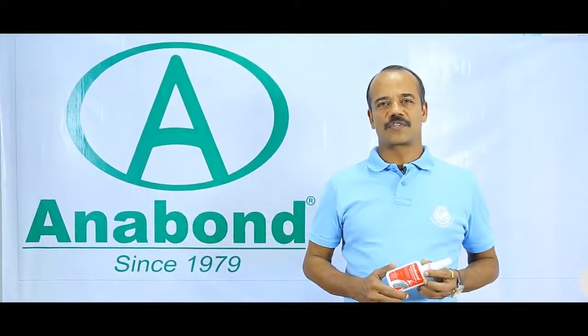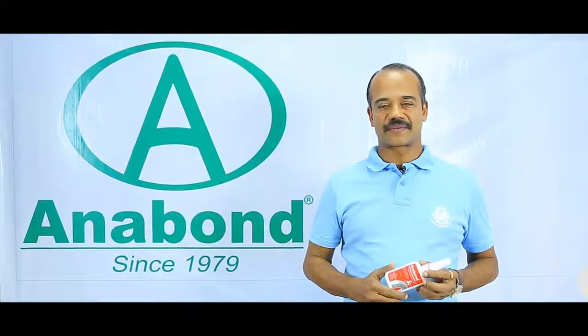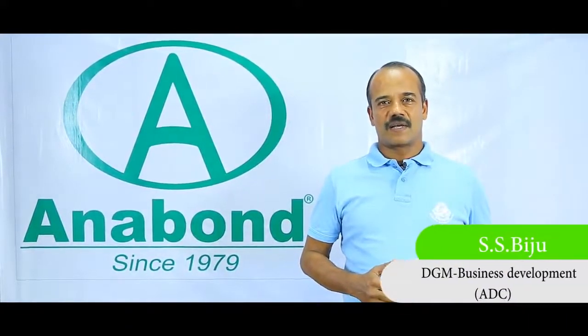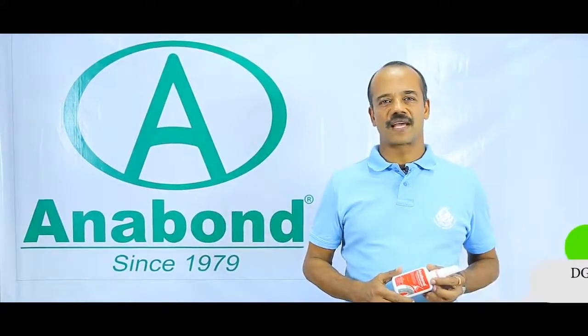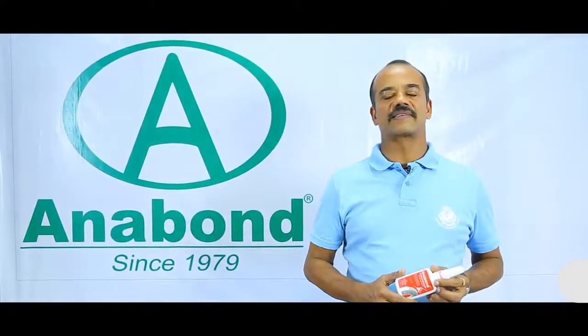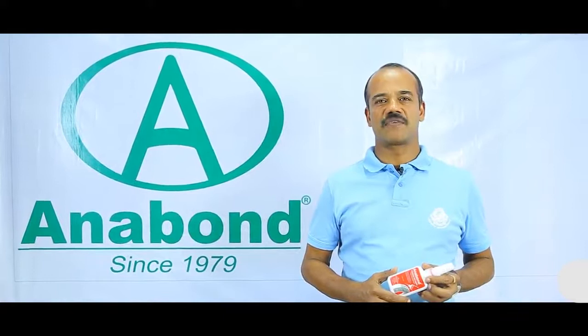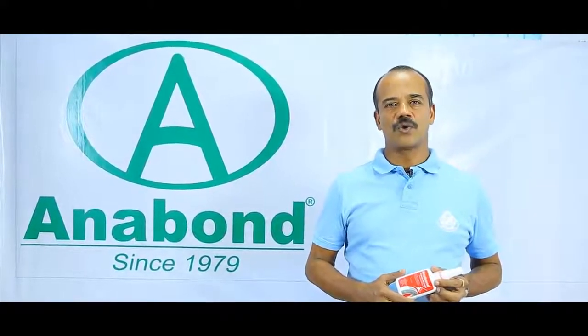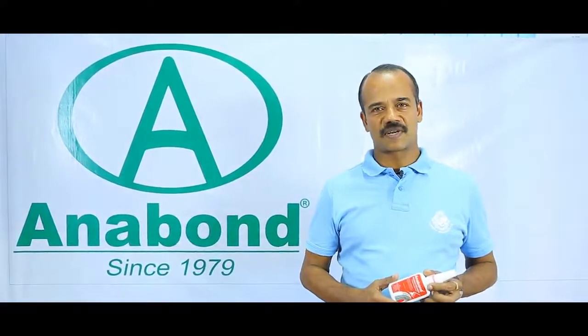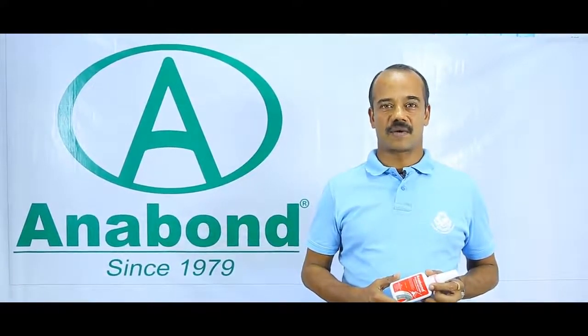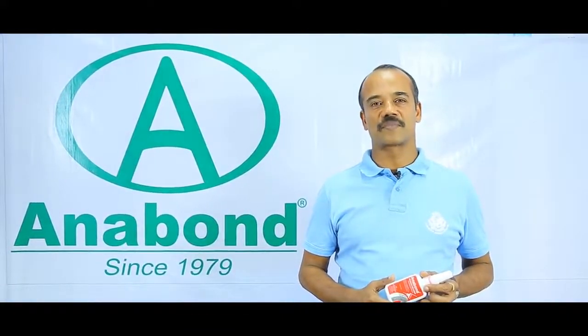A warm welcome to this presentation on Anabond anaerobic bearing retainers. Bushes, bearings, and other coaxially fitted parts have traditionally been fitted with very heavy interference. This creates fretting corrosion and ensures that the assembly fails very fast. Use of anaerobic bearing retainers from Anabond ensures 100 percent metal-to-metal contact, thereby eliminating the fretting corrosion and ensuring long life of the mated parts.